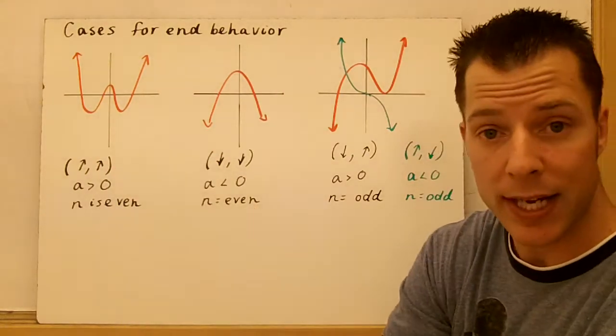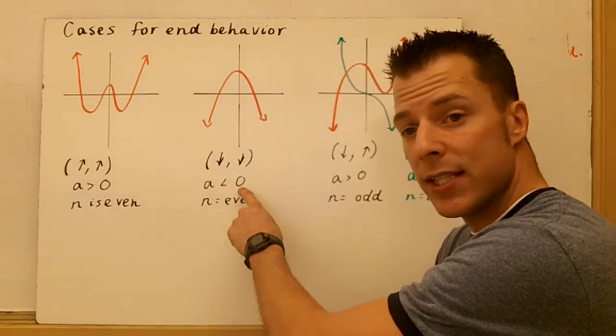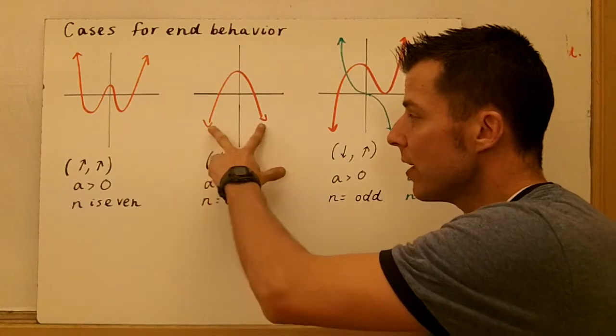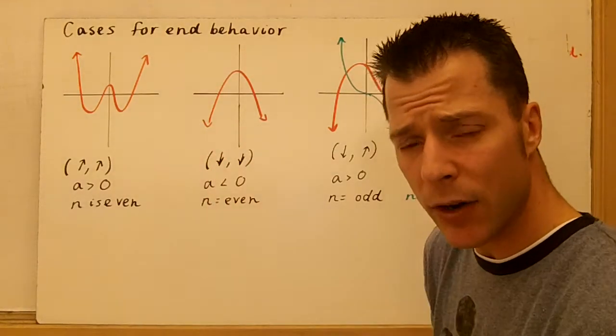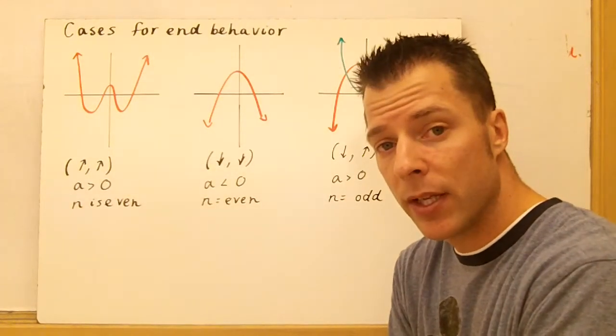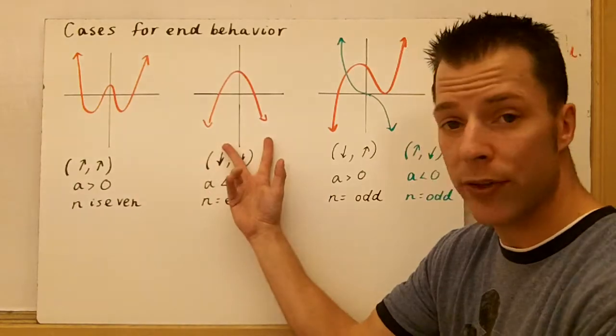Now, opposite of that is down-down. The only thing that changes is a becomes less than zero. You still have an even degree, but a is less than zero, so you have down-down. Now, the thing you have to realize about when your degree is even, the end behaviors are always going to go in the same direction, whether they're both up or both down. That's key.